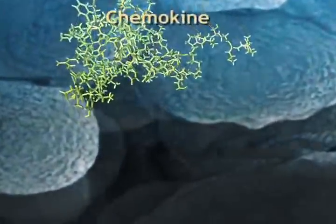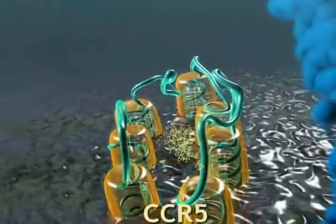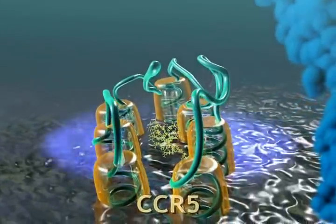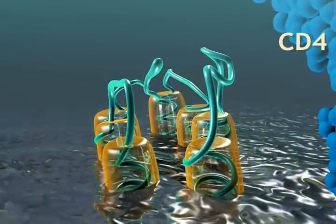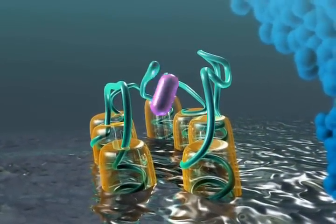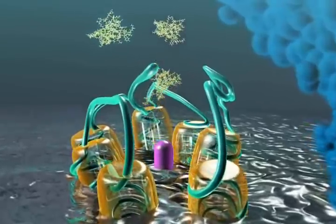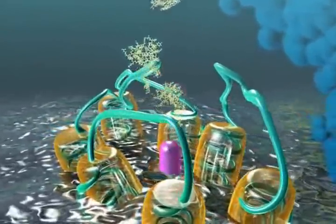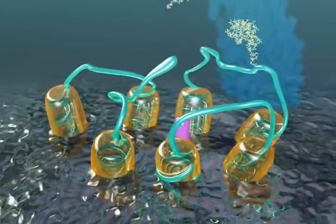The normal function of CCR5 is to bind chemokines, molecules that regulate inflammation. Other HIV drugs that target CCR5 bind deep within the pocket of the receptor, and thereby inhibit binding of both HIV and chemokines. The long-term disruption of the chemokine inflammatory response has unknown consequences.